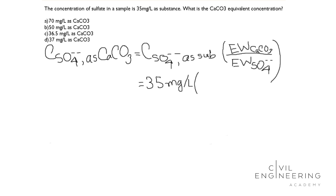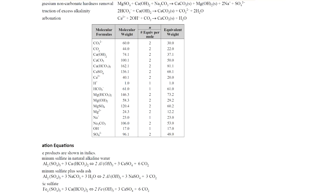If we go to the NCEES handbook, we can see in the environmental engineering chapter a table listing molecular formulas, molecular weight, and equivalent weight. We need calcium carbonate and sulphate. The equivalent weight of calcium carbonate is 50, and for sulphate it is 48. We can easily use these equivalent weight values from the table, which will save time in the examination hall.